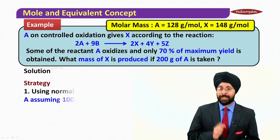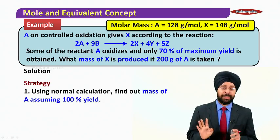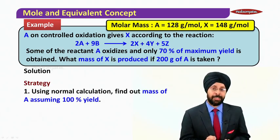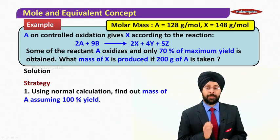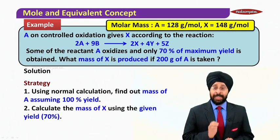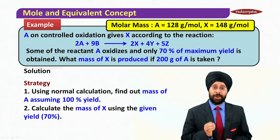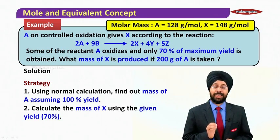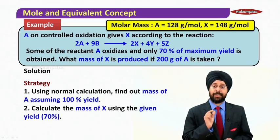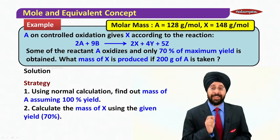Now what should be the strategy? First of all, using normal calculation, find out the mass of A assuming 100% yield. And then, using the mass of X that we have calculated, we will calculate the actual mass by using the percentage yield of 70%.